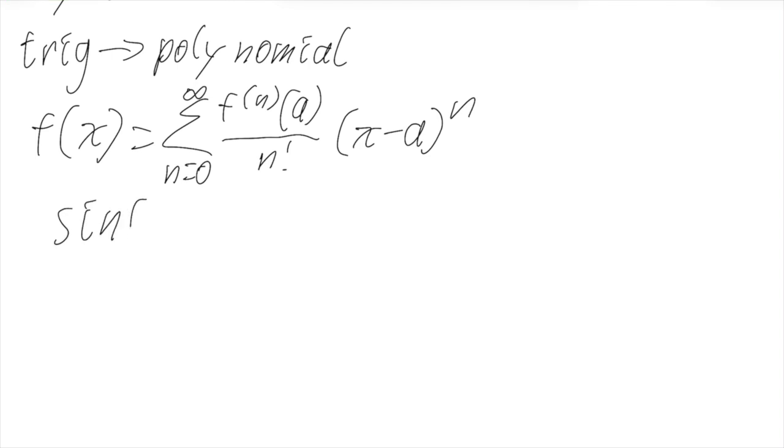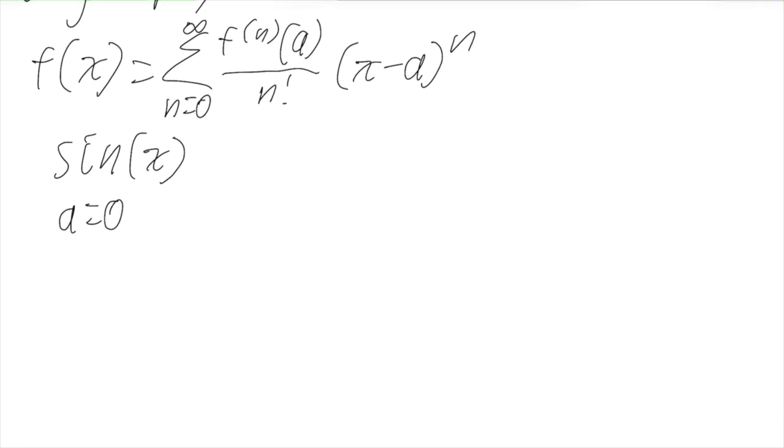So this is a bit daunting, but let's try an example with sine of x. So the key here is that a is just any number that we choose, real or complex. So for the purposes of simplicity, we'll use a equals zero. By the way, this is a special type of Taylor series called a Maclaurin series.